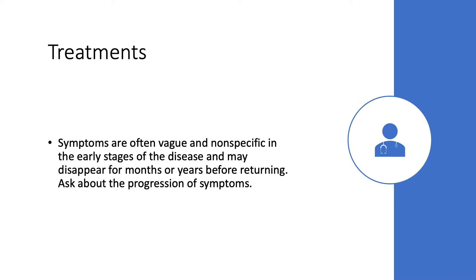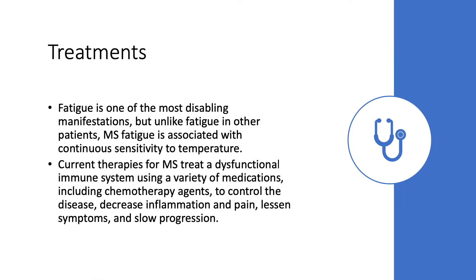It is important that the nurse ask about the progression of symptoms. Fatigue is one of the most disabling manifestations, but unlike fatigue in other patients, MS fatigue is associated with continuous sensitivity to temperature. Current therapies treat the dysfunctional immune system using medications including chemotherapeutic agents to control the disease, decrease inflammation and pain, lessen symptoms, and slow the progression of the disease.